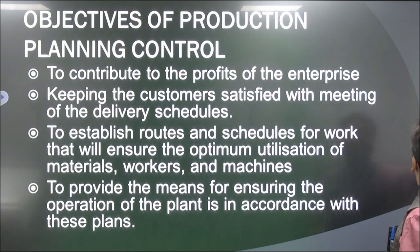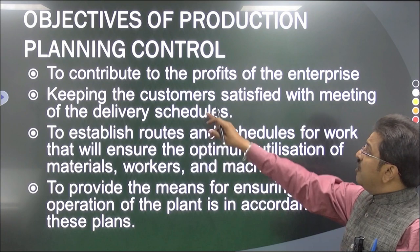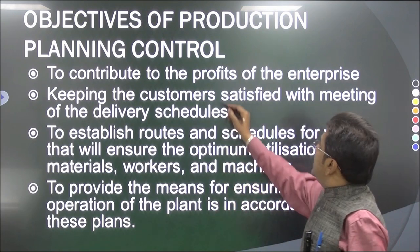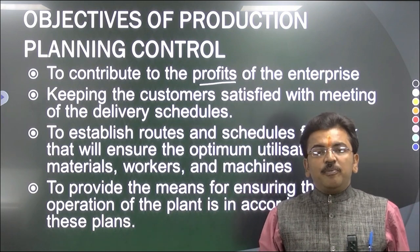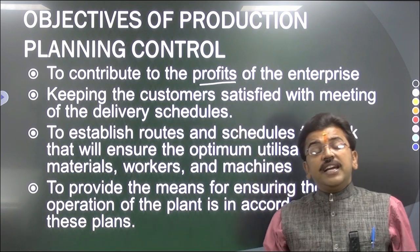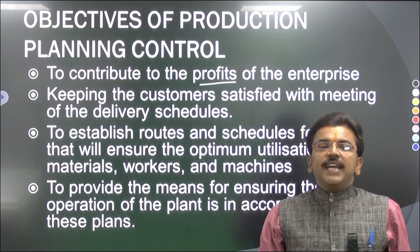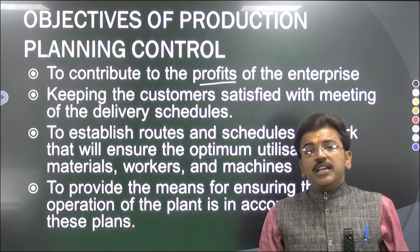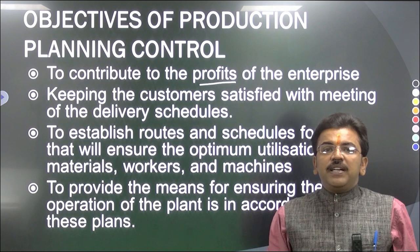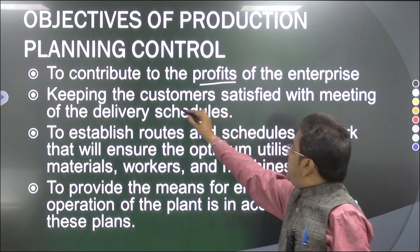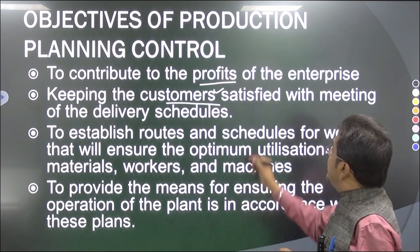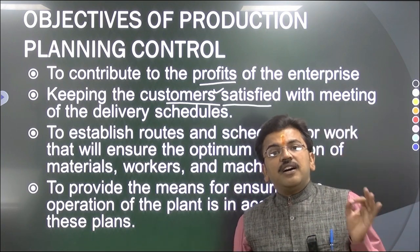Now let's see what are the objectives of Production Planning and Control. These objectives are very important as they tell you about the whole process of production management. First is to contribute to the profit of the enterprise — all organizations in manufacturing work for profit, and no business can operate at a loss. The best product you get, the best output you have, and the best profit you can achieve. Second is keeping the customer satisfied by meeting delivery schedules. If you have a proper supply chain management set up, the customer gets the product on time, which achieves customer satisfaction.